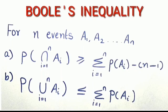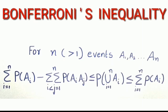Boole's inequality: For n events A1, A2, etc. — First inequality: P(∩ Aᵢ) ≥ Σ P(Aᵢ) − (n−1). Second inequality: P(∪ Aᵢ) ≤ Σ P(Aᵢ).